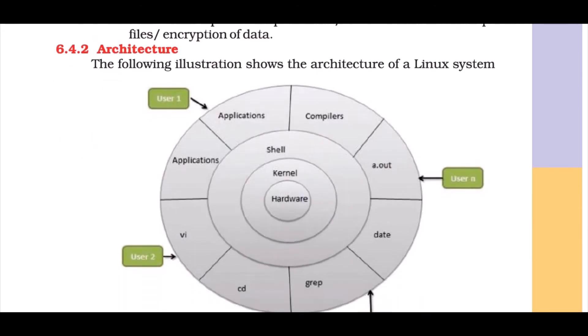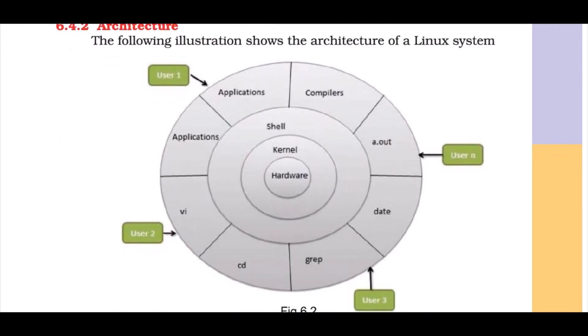Regarding Linux architecture, the diagram shows different levels: Hardware is in the inner circle — the end part where a user from outside accesses information. Hardware communicates with the kernel, the kernel communicates with the shell (the command line), and the shell communicates with all applications, compilers, input-output, and so on.